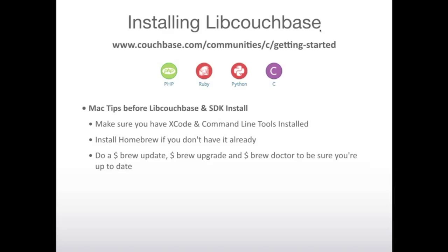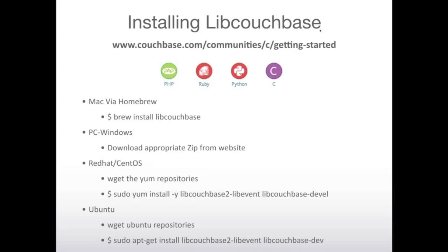For PHP, Ruby, and Python, you'll want to do the getting started for the C library. On Windows, download the appropriate zip file from the getting started page — we have versions for different versions of Windows and Visual Studio. On Red Hat, CentOS, and Ubuntu, get the repository first and then do sudo yum install or apt-get install libcouchbase.